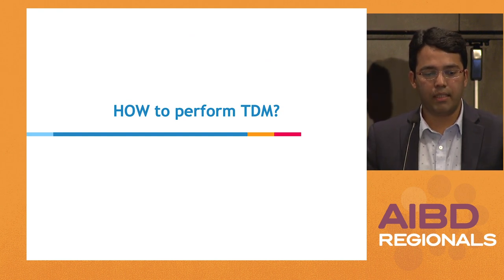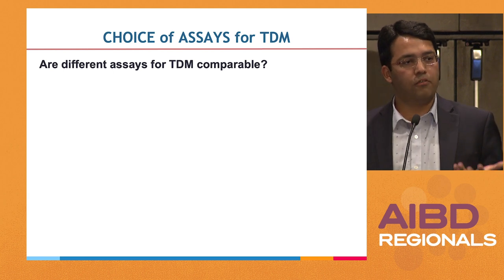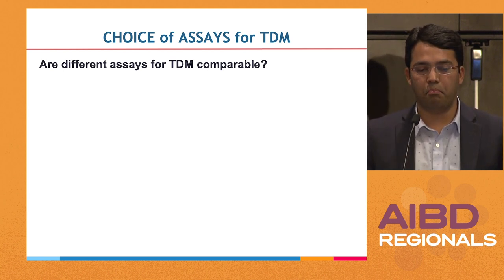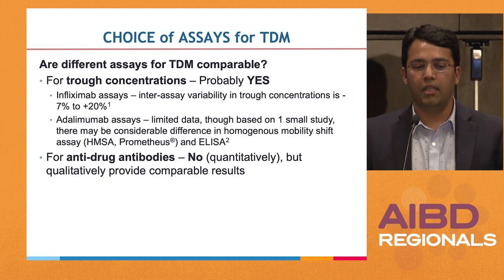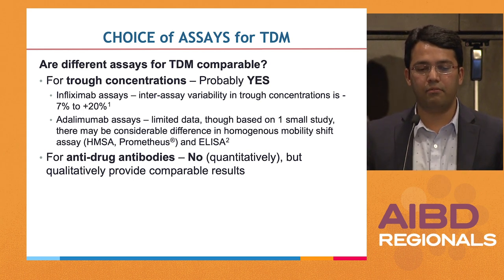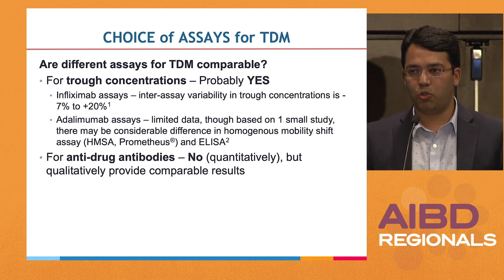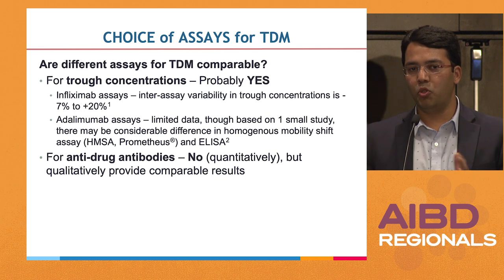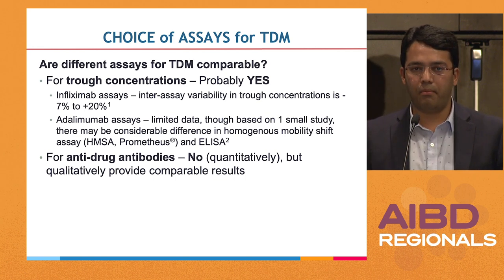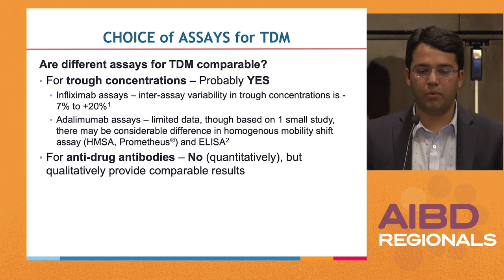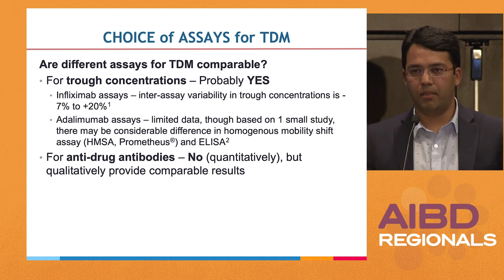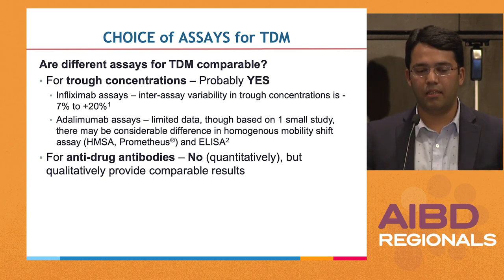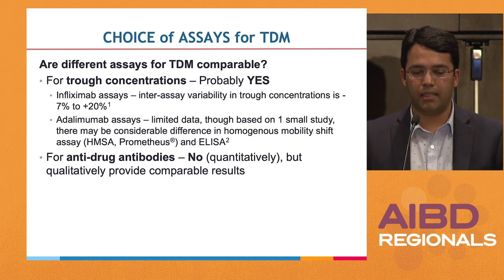How do we perform therapeutic drug monitoring? We have a choice of multiple different assays. Are different assays for therapeutic drug monitoring comparable? For assessment of trough concentration, that is probably correct. For infliximab assays, inter-assay variability in trough concentration is roughly minus 7 to plus 20 percent. Industry standards say up to plus-minus 20 percent is acceptable. For adalimumab assays there is limited data, with one small study showing considerable differences between the homogenous mobility shift assay and an ELISA-comparable assay.